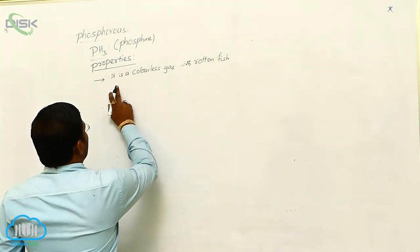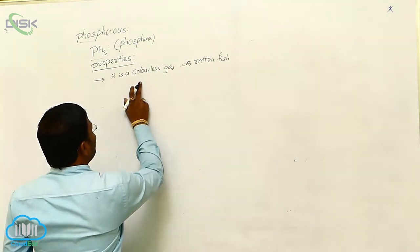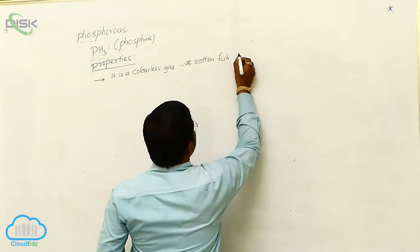The physical state of phosphine is a colorless gas with rotten fish smell.